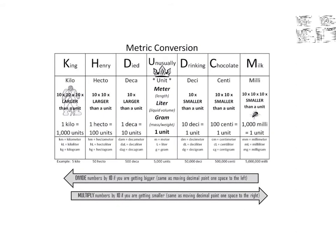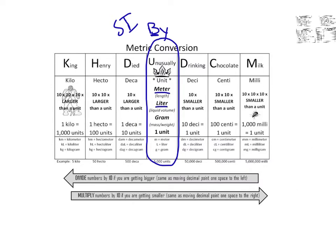This is a metric conversion scale. We start out with our base units for SI. The acronym is 'King Henry died by drinking chocolate milk,' where 'by' represents the base unit: meter, liter, gram. Meter is for distance, liters for volume, gram is for weight. And then we also have time, which is usually not included.